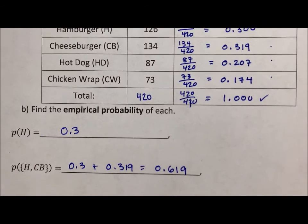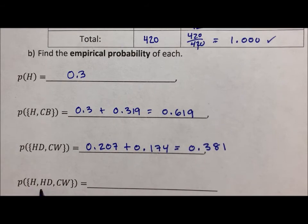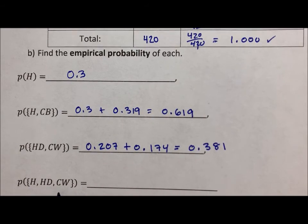Why do I bring all this up? Well, right here, you're being asked about hamburger, hot dog, and chicken wrap, which is three things. Or we could just take 1 minus that cheeseburger, which is missed, which is 0.319, the one missing piece, and get 0.681. Because the whole sample space has to add up to one. If you're asked about all but the missing one, just subtract the missing one out.